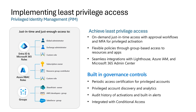These role activations are not only time-limited but also protected by conditional access. When a user activates a role, PIM can trigger conditional access enforcement to apply authentication strengths, Intune compliance, third-party MFA, and location requirements. For example, an organization can now require phishing-resistant authentication when activating a role for production Azure subscriptions or AWS accounts. As another example, location requirements can be enforced when activating membership in the group that provides access to sensitive applications.